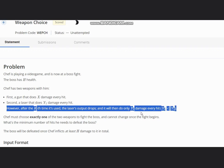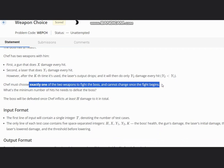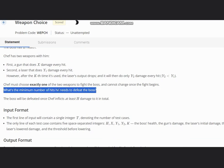Chef must choose exactly one of the two weapons to fight the boss and cannot change once the fight begins. What's the minimum number of hits he needs to defeat the boss? The boss will be defeated once Chef inflicts at least H damage to it in total.